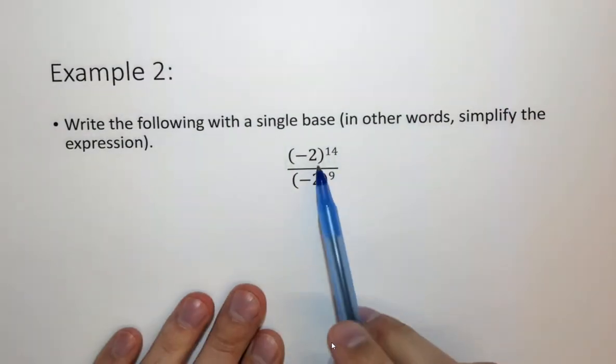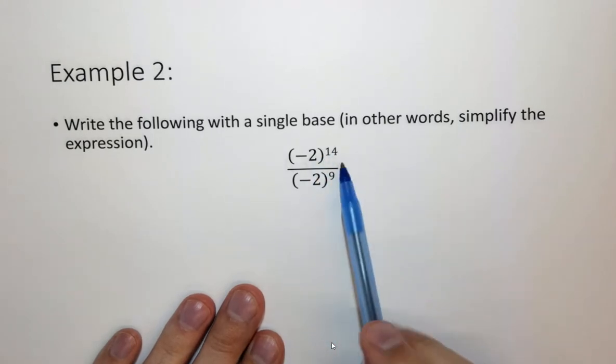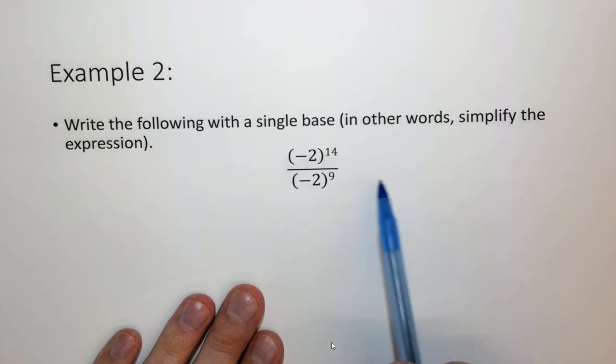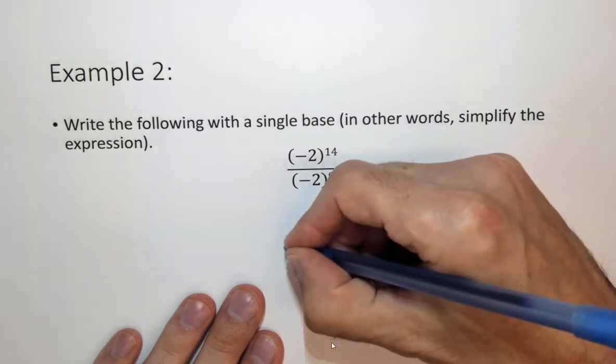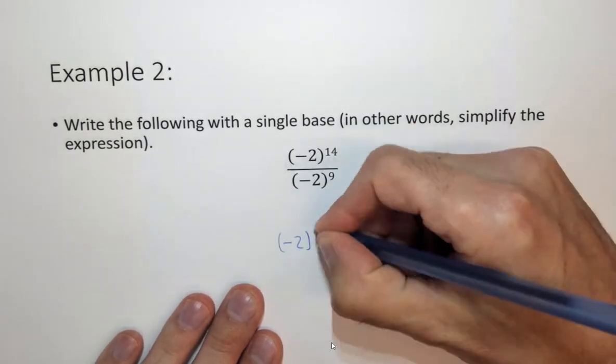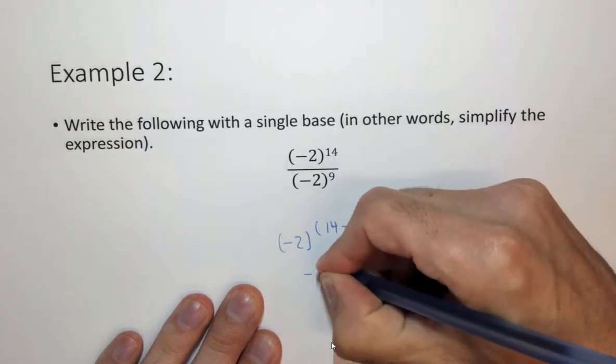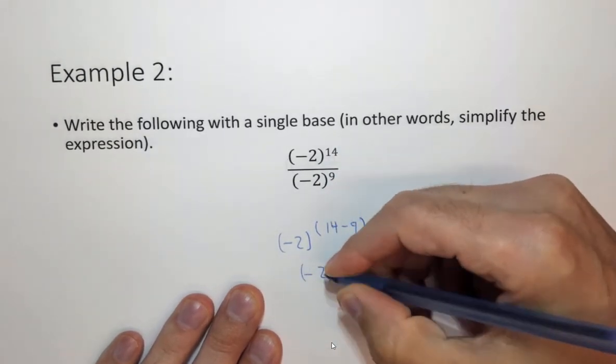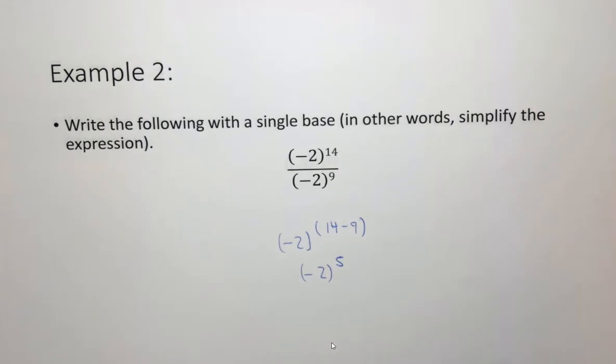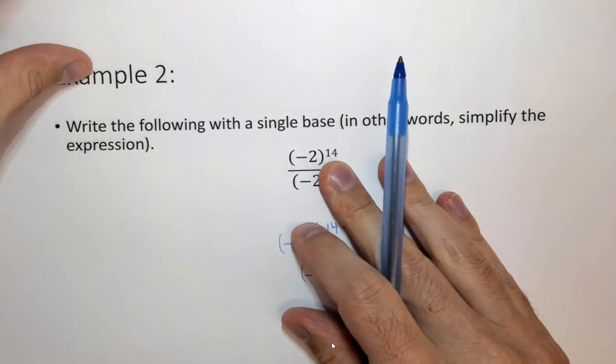In the next example we're dividing by exponents. And when you multiply you add, when you divide you subtract. So this is minus 2 to the 14 minus 9 or minus 2 to the fifth. So when you multiply exponents you add them, when you divide exponents you subtract.